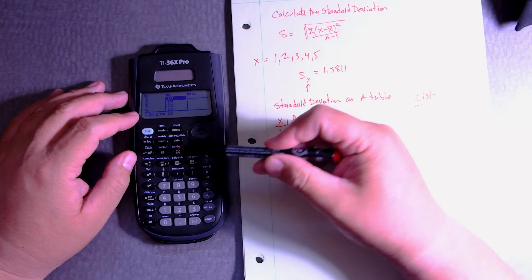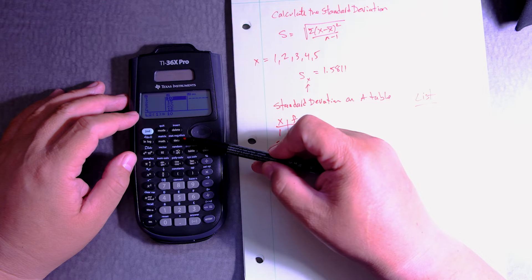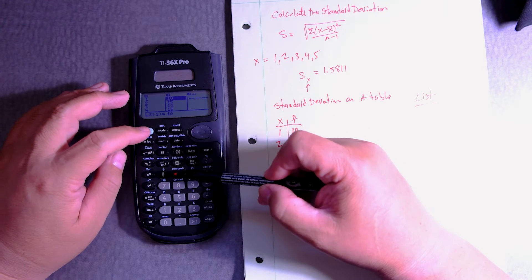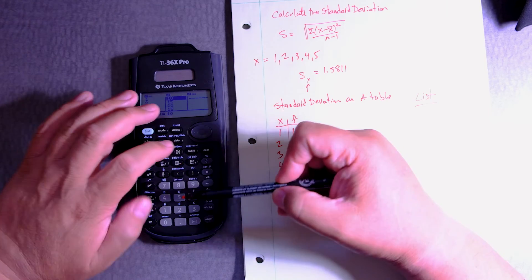Okay, now we're going to go over here. It says stat distribution in light blue, so light blue button first, and then data.